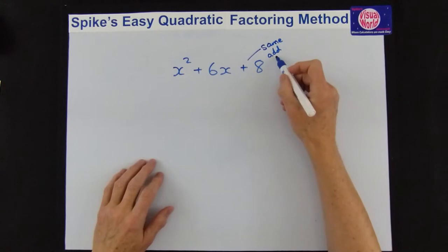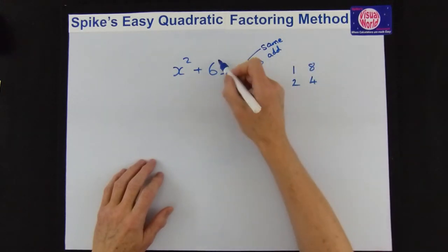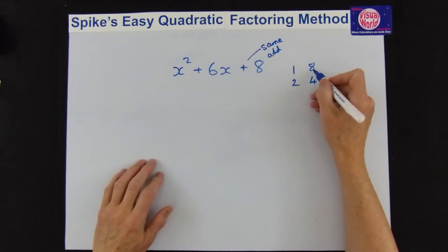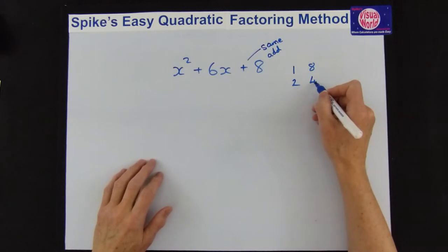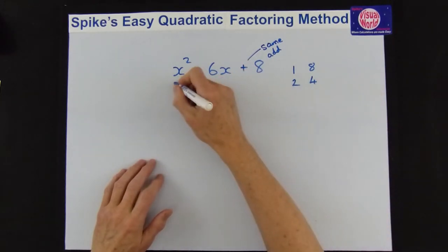We're adding the numbers and we're adding them to get you the middle number. So 1 plus 8 gives you 9, so that can't be correct, but 2 plus 4 gives you 6. So that means 2 and 4 are our numbers.